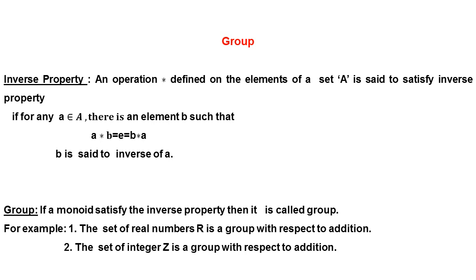For example, the set of real numbers R is a group with respect to addition. If we take any two real numbers and add them, the resulting element belongs to the set of real numbers. That is why a group holds all four properties, and R under addition is a group. The set of integers Z is also a group with respect to addition.